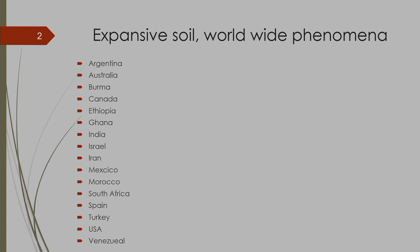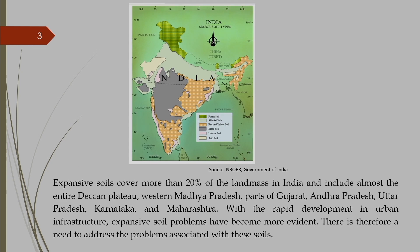Most parts of the world have this expansive soil. In India, around 20 percent of our land mass is covered by expansive soil. It is known as black cotton soil. Mostly it is present in the Deccan Plateau, Western Madhya Pradesh, parts of Gujarat, Andhra Pradesh, Uttar Pradesh, Karnataka, and Maharashtra.